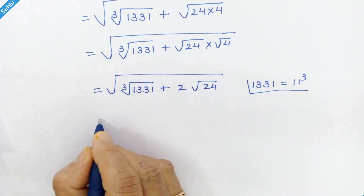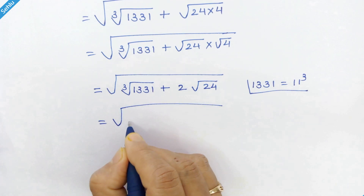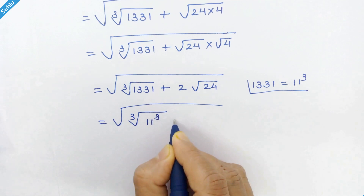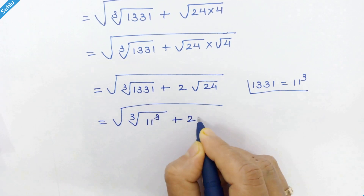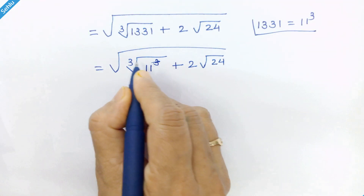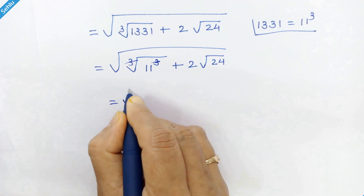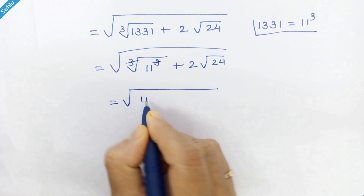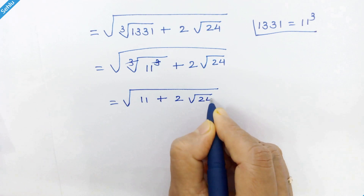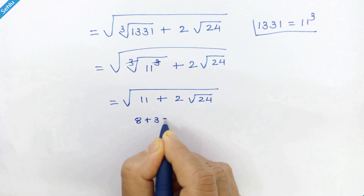In the next step we have cube root of 11 cubed plus 2 times square root of 24. The cube and cube root cancel out, so we have the square root of 11 plus 2 times square root of 24.